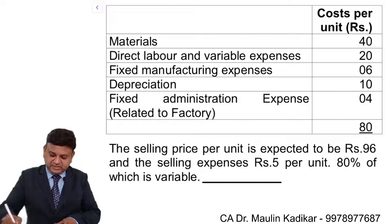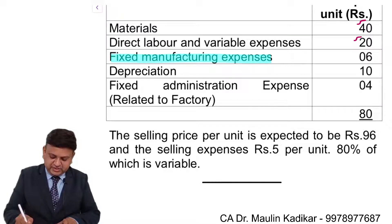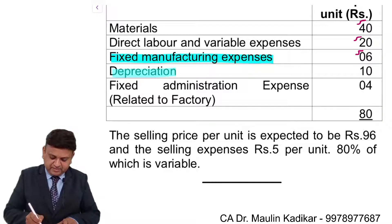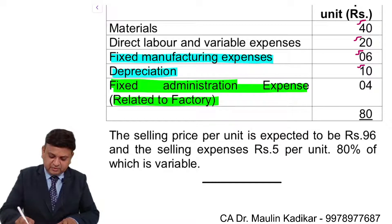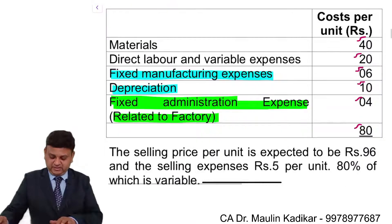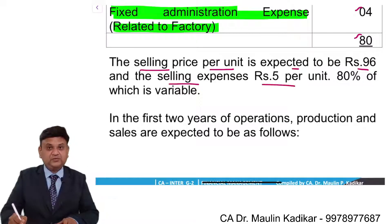Cost per unit is given for material — an amount of 40 rupees. Direct labor and variable expense is 20 rupees. Fixed manufacturing expenses: 6 rupees. Depreciation: 10 rupees. Fixed administration expenses related to the factory: 4 rupees. So the total comes to 80 per unit, and the selling price is expected to be 96. Selling expenses: 5 rupees per unit, 80% of which is variable.